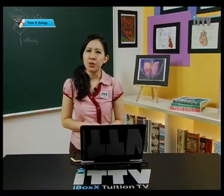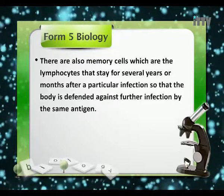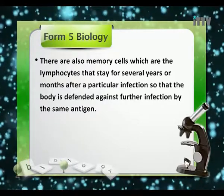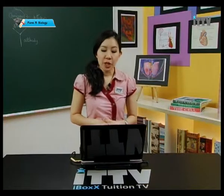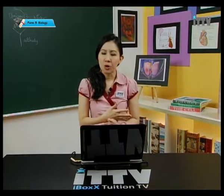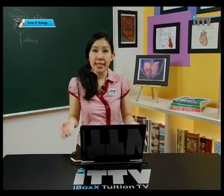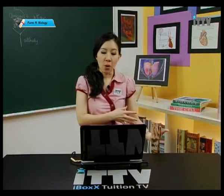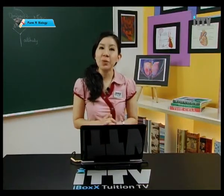There are also memory cells, which are lymphocytes that stay for several years or months after a particular infection, so that the body is defended against further infection by the same antigen. Most of us would have had chicken pox, measles, or mumps during young age, and we would not get the disease for a second time. This is because of something marvellous called immunity in our body.